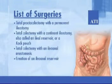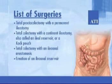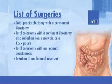Clients who have ulcerative colitis require surgery when their disease is intractable or complications arise, such as fistulas, abscesses, bowel obstruction, or perforation. Types of surgeries for ulcerative colitis include: total proctocolectomy with a permanent ileostomy; total colectomy with a continent ileostomy, also called an ileo-reservoir or Kock pouch; total colectomy with an ileo-anal anastomosis and creation of an ileo-anal reservoir.